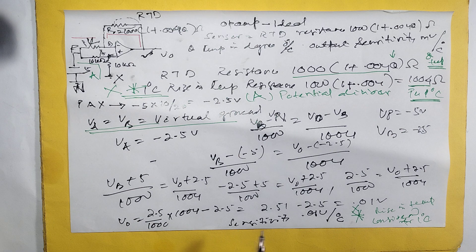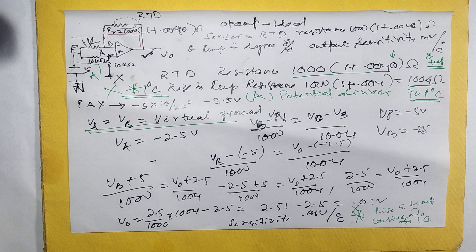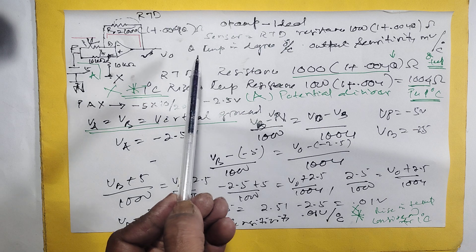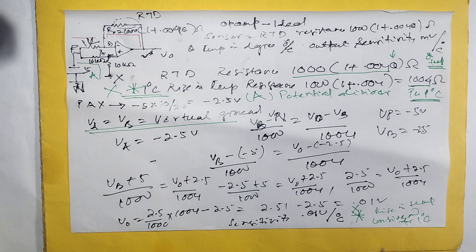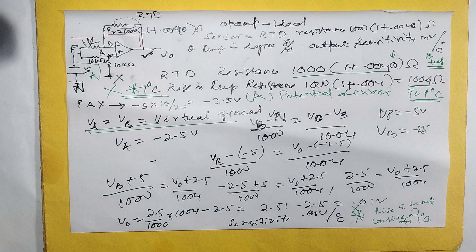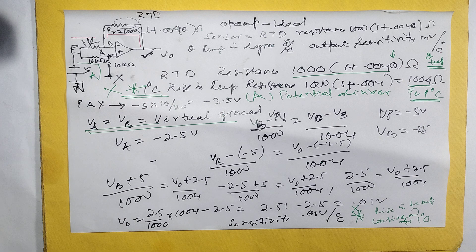Your VO will come 0.1 volt. But 0.1 volt at what location? For 1 degree centigrade rise in temperature. Because we calculate resistor for 1 degree centigrade rise in temperature. So 0.1 volt per degree centigrade rise in temperature. That is the sensitivity of RTD completed.